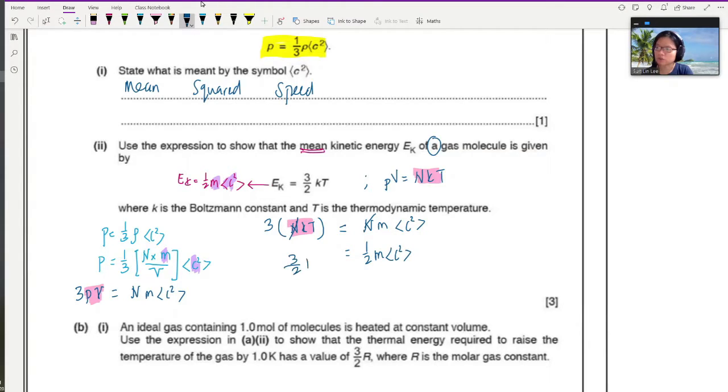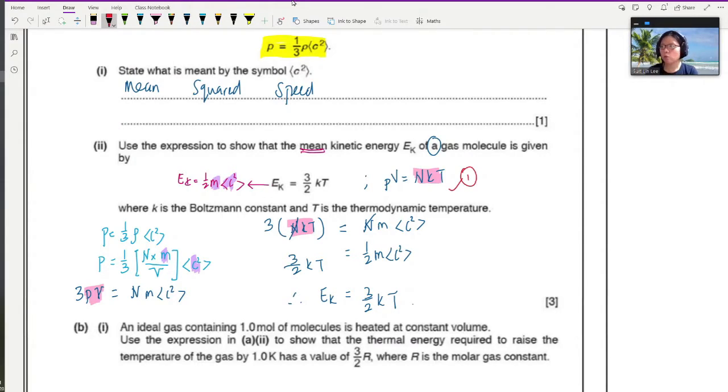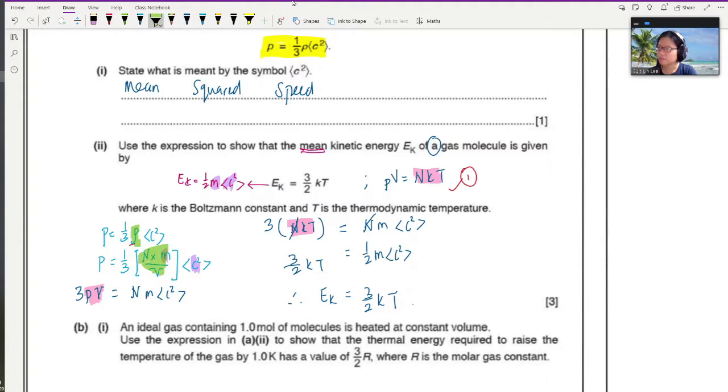This will be 3 over 2 k T will be equal to N m c squared. So of course, the N and N will cancel. And since we want half, so I will multiply both sides of the equation by half. This will be 3 over 2 k T. And you can see finally, hence, the kinetic energy, which is equal to this, will be equal to 3 over 2 k T.